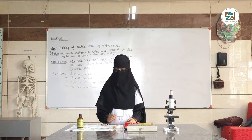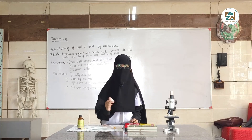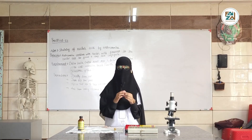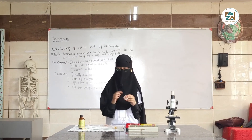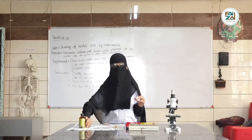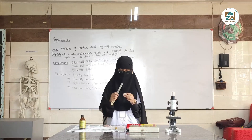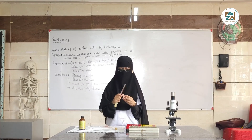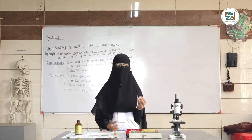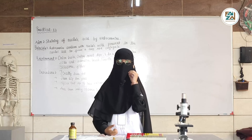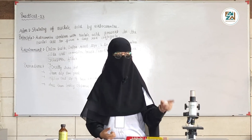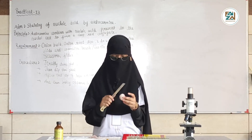Now I am going to proceed step by step on how to stain nucleic acids in an onion. First I have to peel this onion so that I can more closely see the nucleic acid under a microscope.